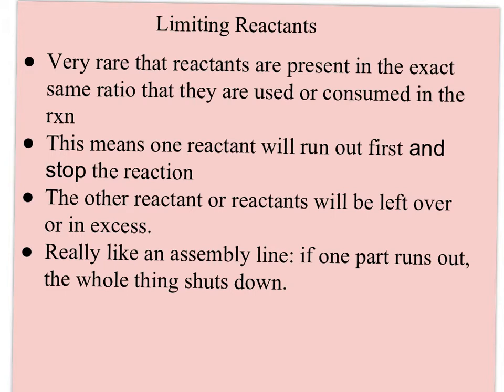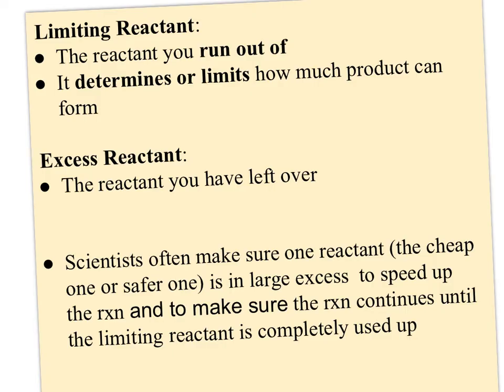So limiting is the one that's going to shut down the reaction just like an assembly line shutting down if one part runs out and then you'll have excess of the other one and that's often deliberate because the excess reactant will keep the reaction rate going quickly. So there's reasons for doing it and we're just going to accept that that's what's going on.